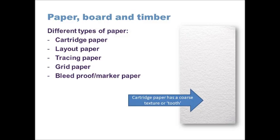Paper as a material is something that we generally draw on and write on. It's quite a compliant material, which means we can fold it quite easily and cut it with knives. The different types of paper you might need to know about for your GCSE exam are: cartridge paper, layout paper, tracing paper, grid paper, and bleed proof — sometimes called marker paper or marker pad. Cartridge paper has quite a rough, coarse texture, sometimes known as a tooth, which makes it easier to abrade materials like chalk pastels, oil pastels, and soft B pencils.